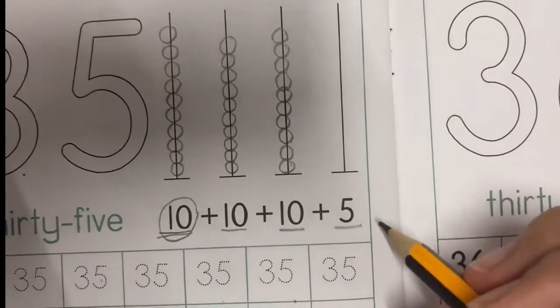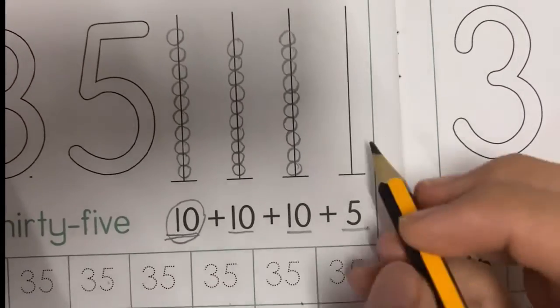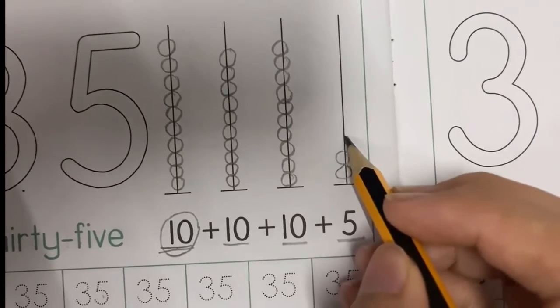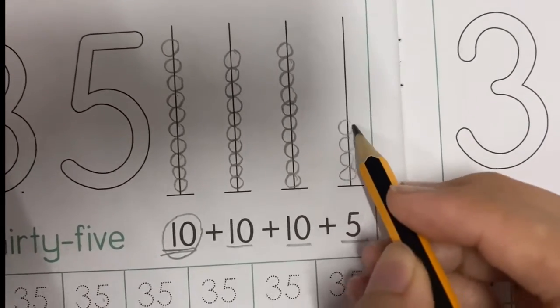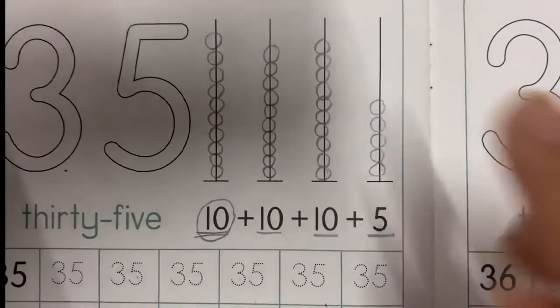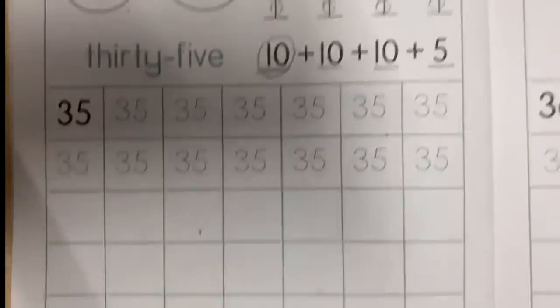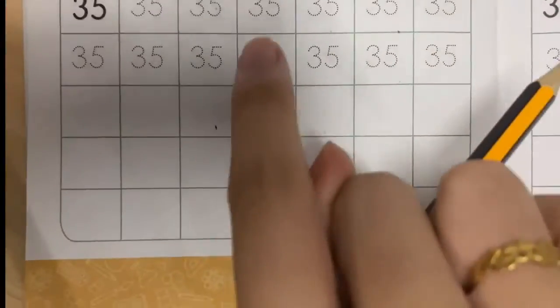Five. Very good: 1, 2, 3, 4, 5. So the total bubbles is 35. Okay, this one is complete. Now you want to do number 36.